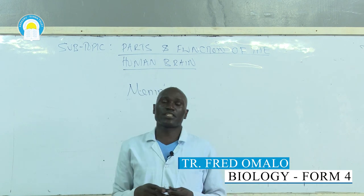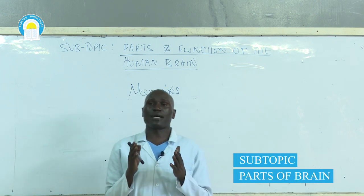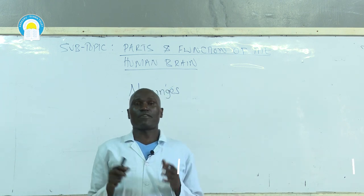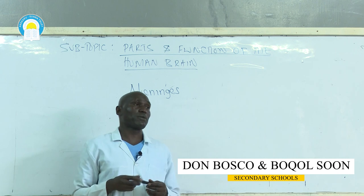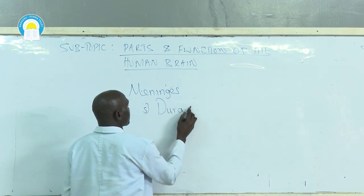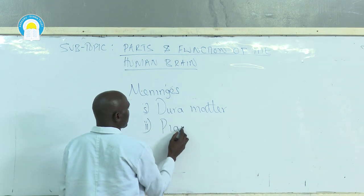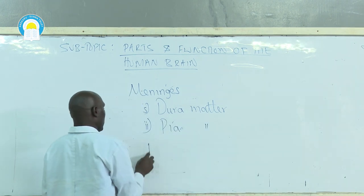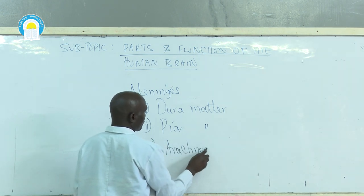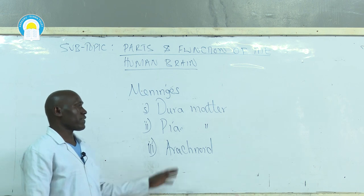The three types of meninges, as mentioned before, are dura mater, located on the outermost parts, and pia mater, the innermost parts. Then in between dura mater and pia mater there is a space known as the arachnoid. So the three meninges — dura mater, arachnoid, and pia mater — are the membranes that cover the brain.